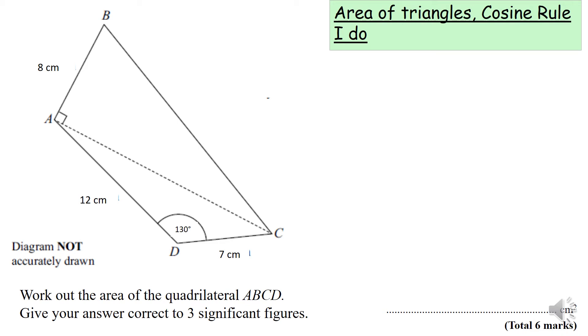Today's homework is on a problem-solving question based around area of triangles and cosine rule. The question asks us to work out the area of the quadrilateral ABCD, giving your answer to three significant figures. This quadrilateral is quite difficult to work out the area for just by looking at it.